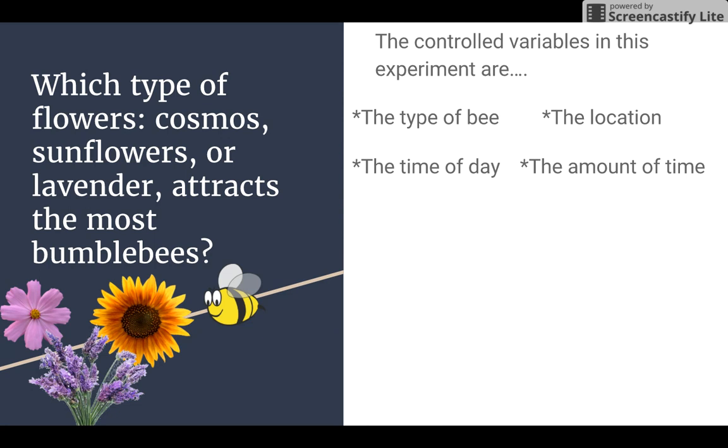The amount of time. You can't look at the cosmos for an hour and only count the lavender for 30 minutes. You have to keep the amount of time that you're counting these bees constant for each type of flower.